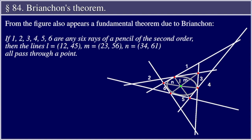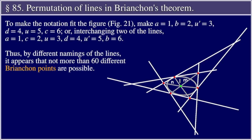Section 84: Brianchon's Theorem. From the figure also appears a fundamental theorem due to Brianchon. If 1,2,3,4,5,6 are any six rays of a pencil of the second order, then the lines L equal to (1,2)(4,5), M equal to (2,3)(5,6), N equal to (3,4)(6,1) all pass through a point. Section 85: To make the notion fit the figure, figure 21, make A equal 1, B equal 2, u' equal 3, D equal 4, u equal 5, C equal 6.